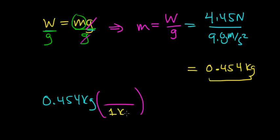Now, you should know that one kilogram is exactly equal to 1,000 grams. Then what happens is this unit of kilogram cancels out with this unit of kilogram, and you multiply 0.454 by 1,000, and you get 454 grams.